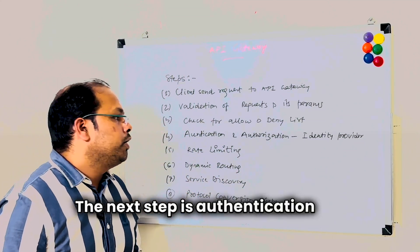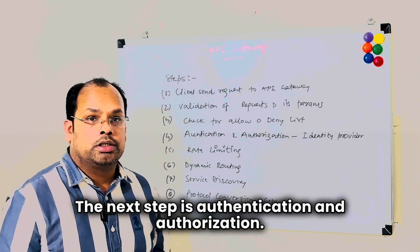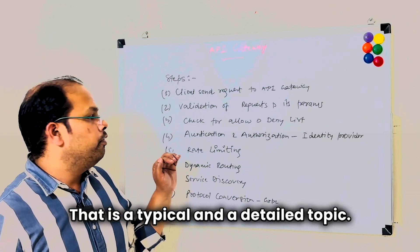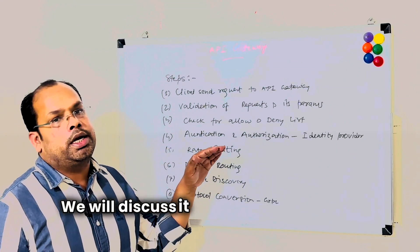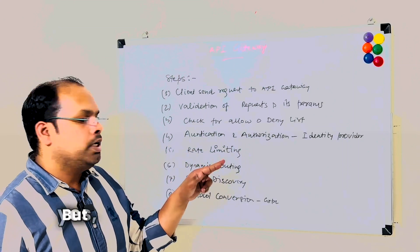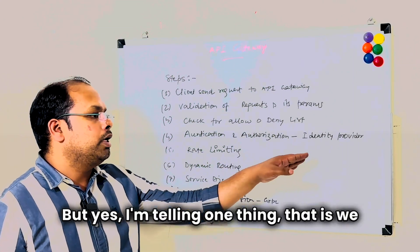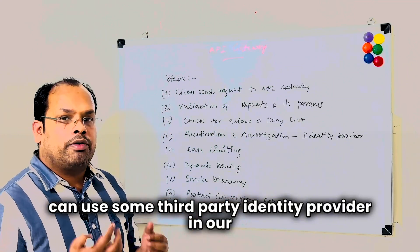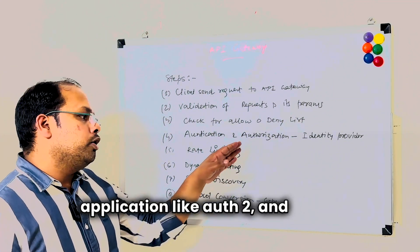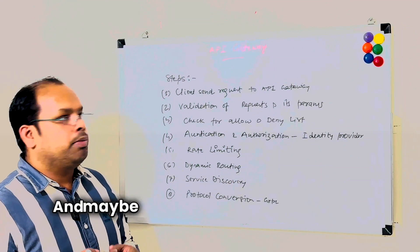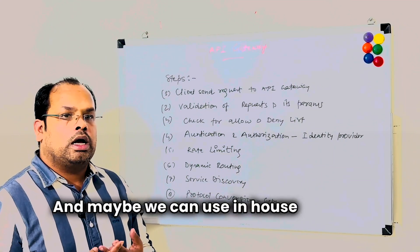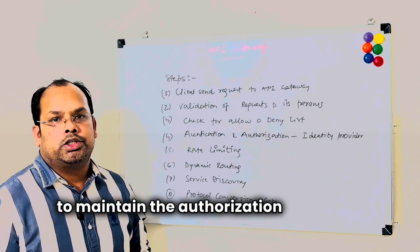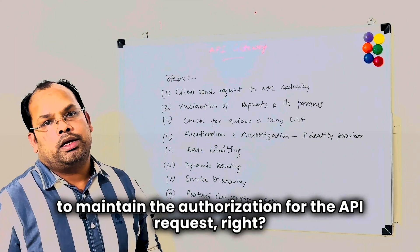The next step is authentication and authorization. That is a typical and detailed topic we will discuss separately in another video. But yes, I'm mentioning one thing: we can use some third party identity provider in our application like OAuth 2 and do the authorization, and maybe we can use in-house complex logic to maintain the authorization for the API request.